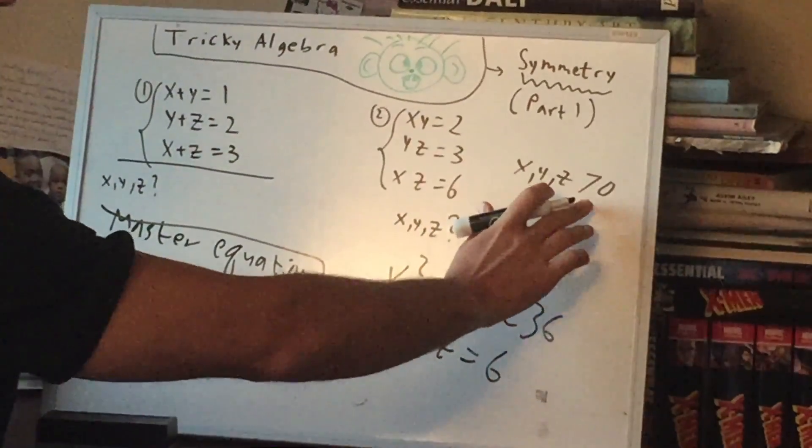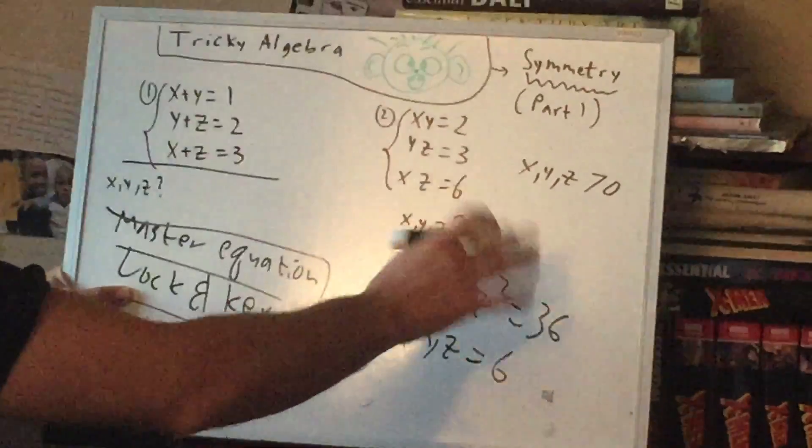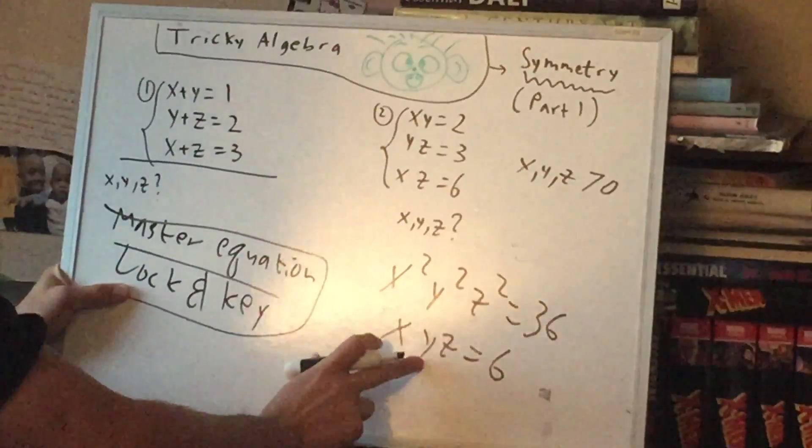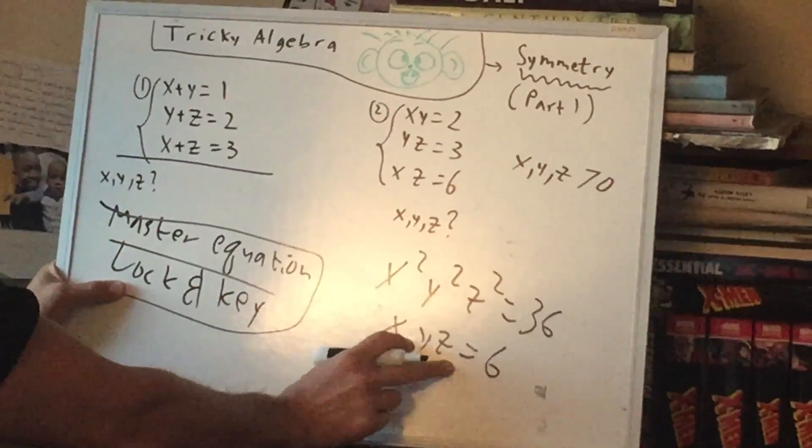The reason I did this little condition is that otherwise we have to consider the case where this is plus or minus 6. Then, that's not the point of this problem. Alright, so then we get the master equation again. We take these three letters, combine it with any of the others.